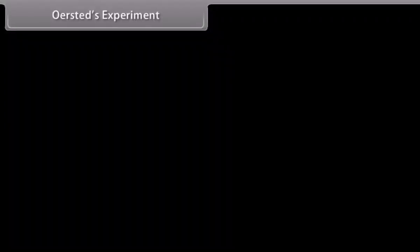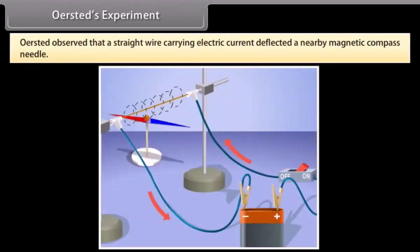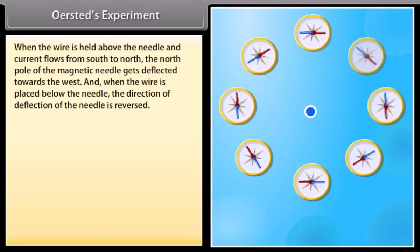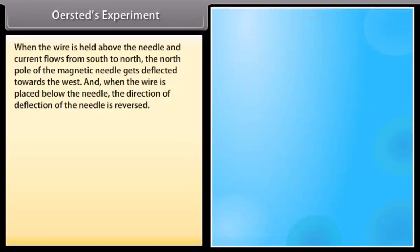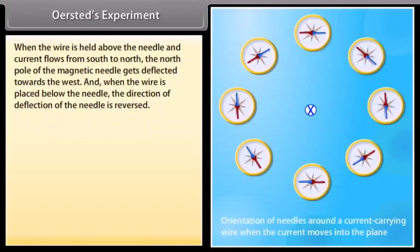Oersted's experiment: Oersted observed that a straight wire carrying electric current deflected a nearby magnetic compass needle. When the wire is held above the needle and the current flows from south to north, the north pole of the magnetic needle gets deflected towards the west.